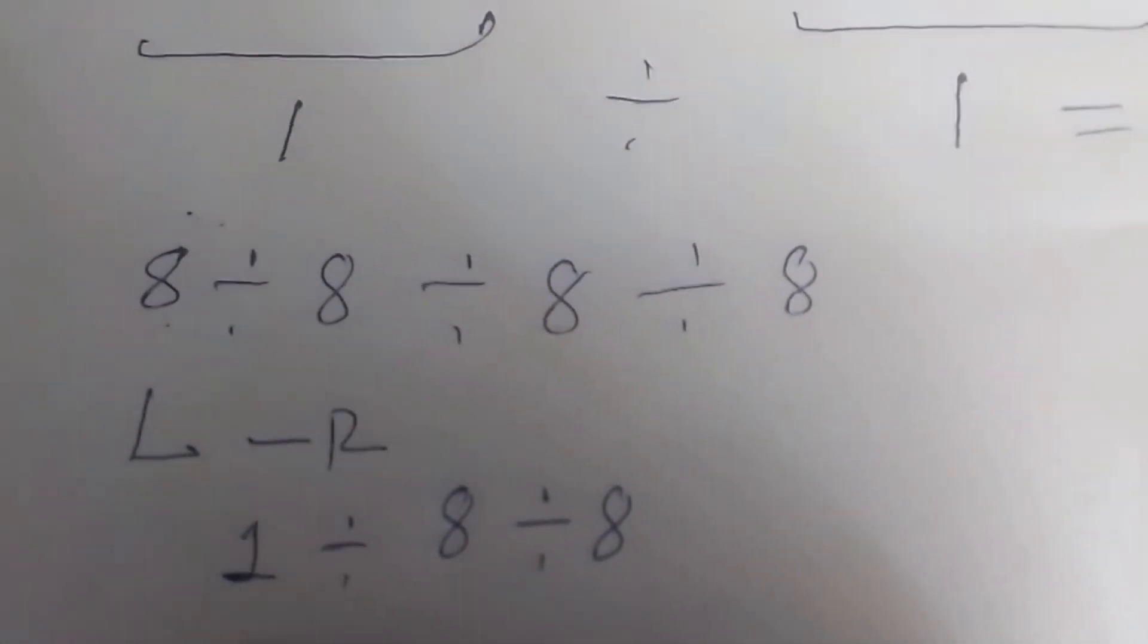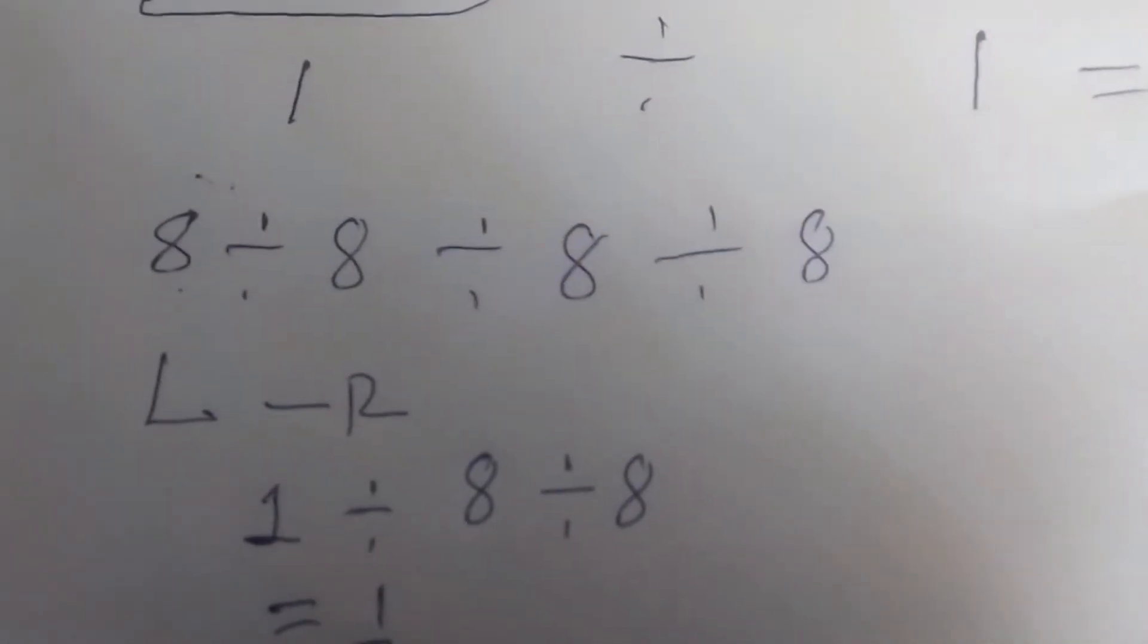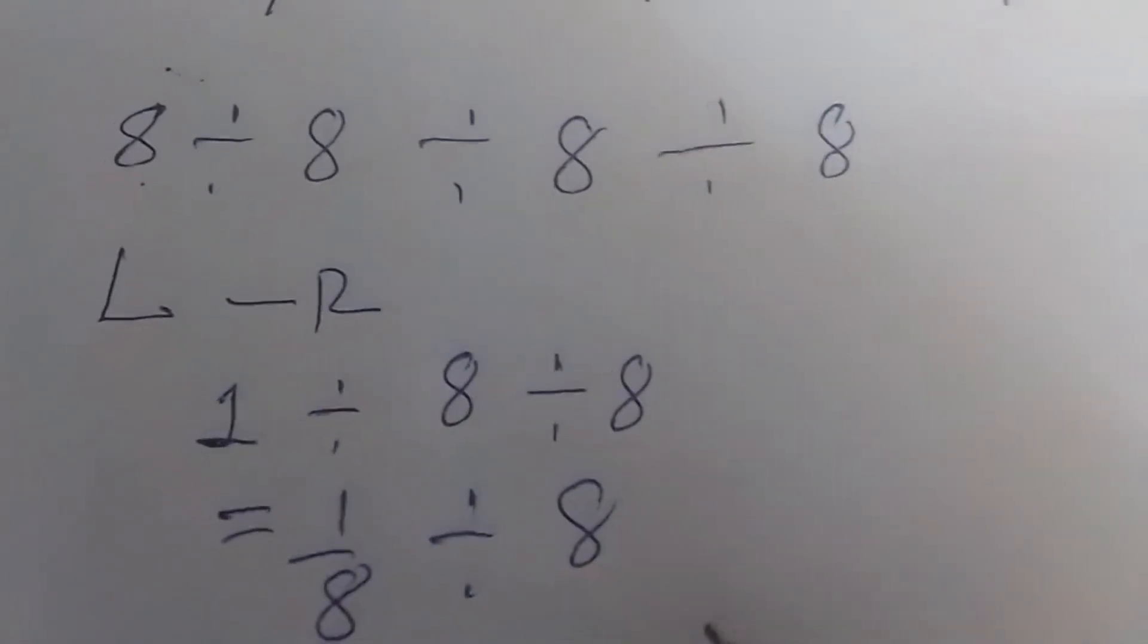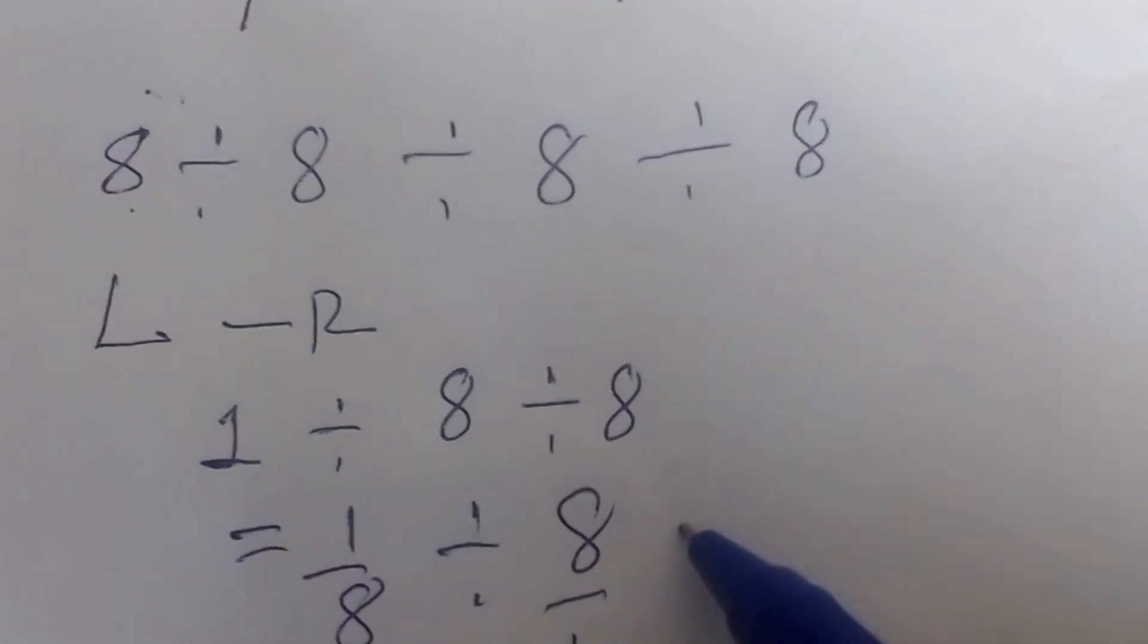1 divided by 8 can be written as 1 over 8 divided by 8 over 1. Yeah, this can...